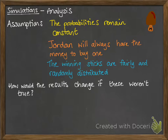We also have to consider what would happen if those assumptions weren't actually true and how it would change our results. If the probabilities weren't constant, it would affect our results. For example, if he was affected by the weather on the day and had a lower chance of actually buying a magnum, then it would reduce his chances of winning, and vice versa.